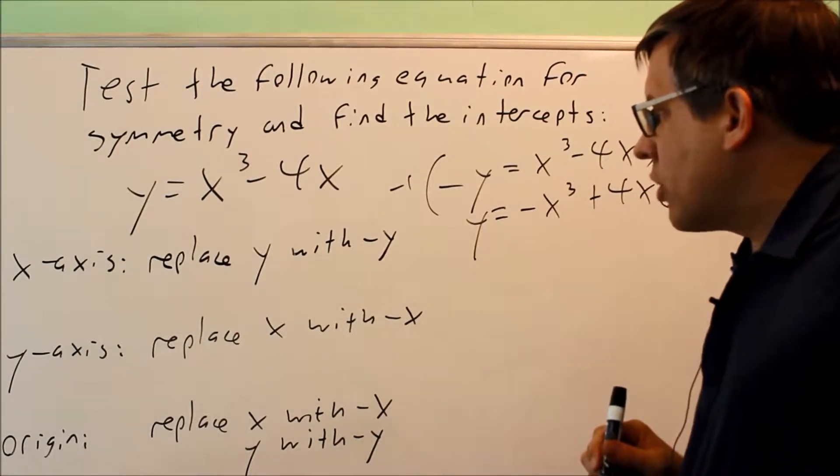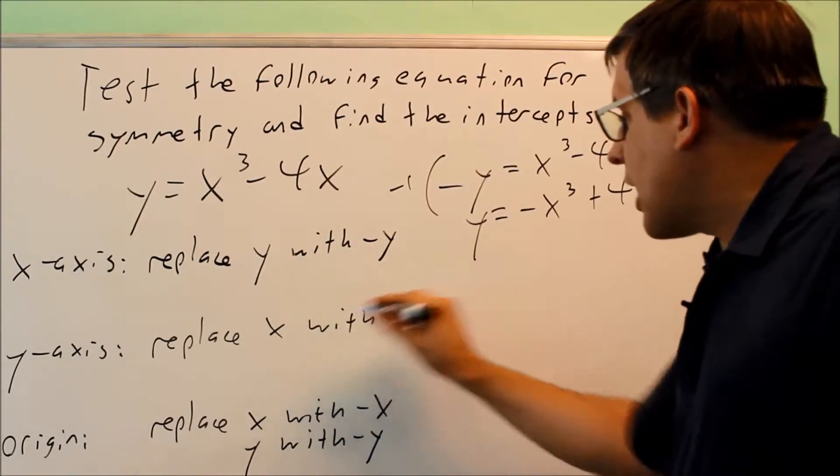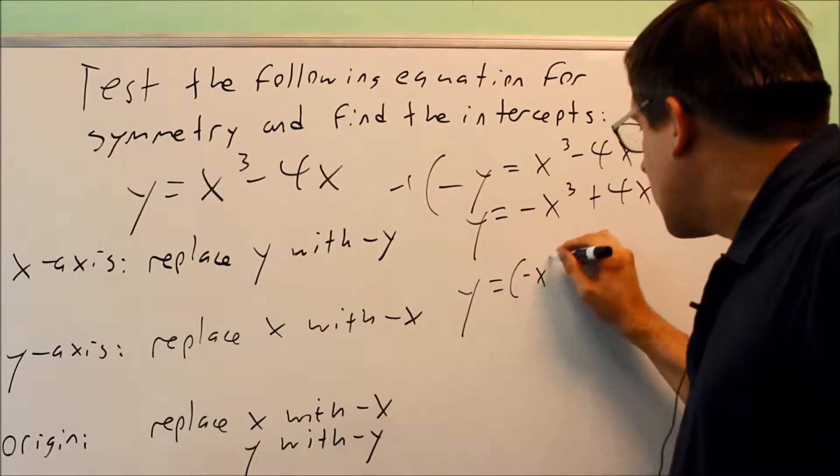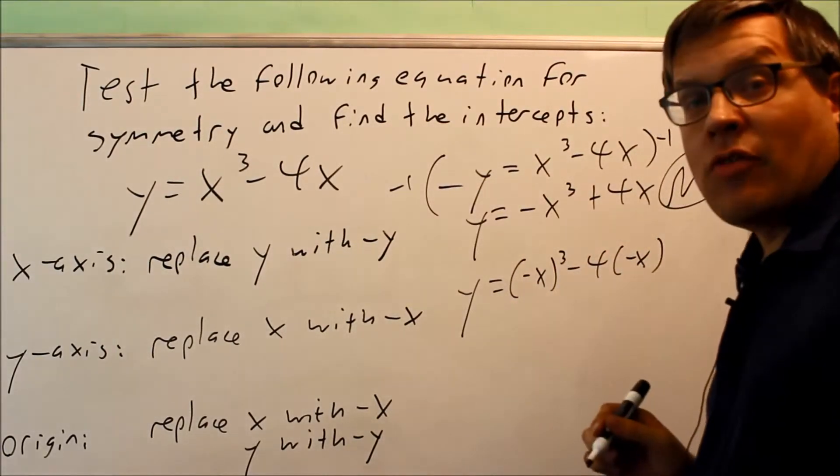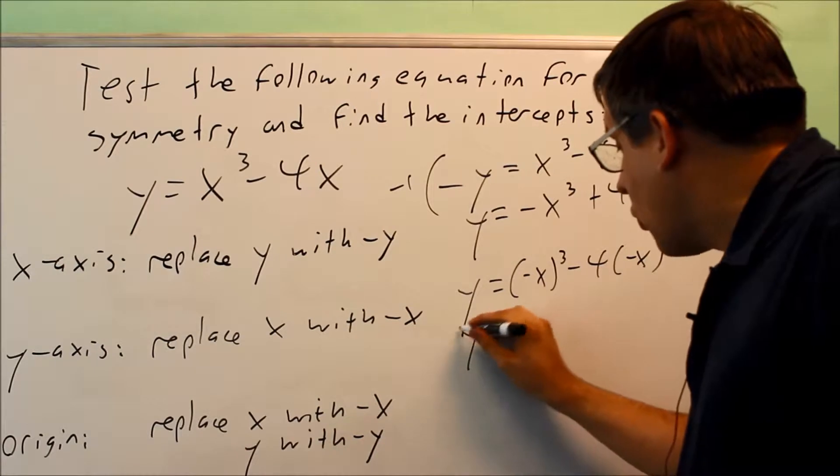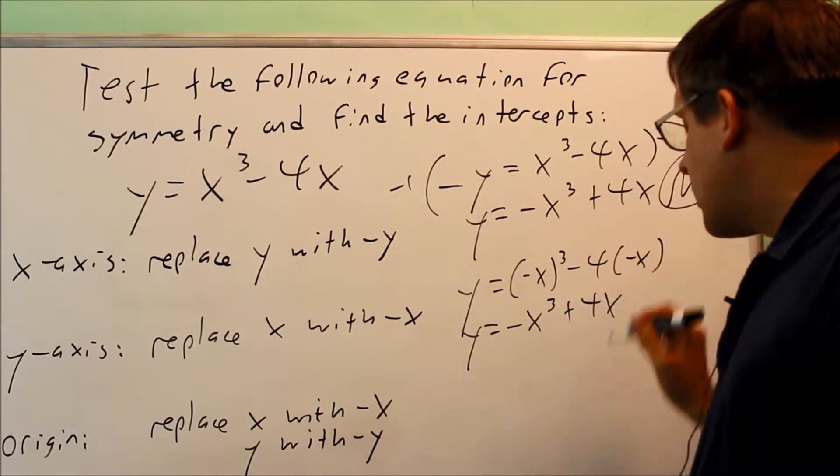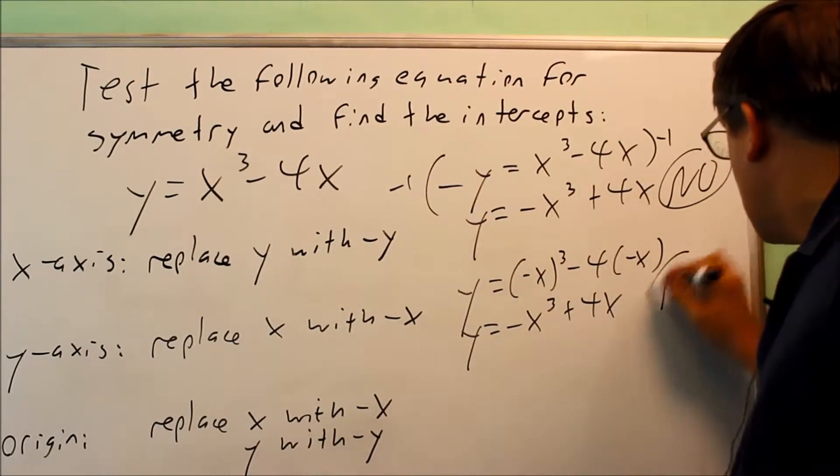Let's test the next one. We're going to test the y-axis symmetry. Now we're going to replace x with negative x. I have y equals negative x cubed minus 4 times negative x. I'm going to simplify this. I get y equals negative x cubed plus 4x. That's not the same as the original one either, so this is also going to be a no.